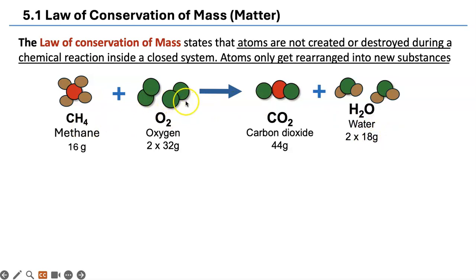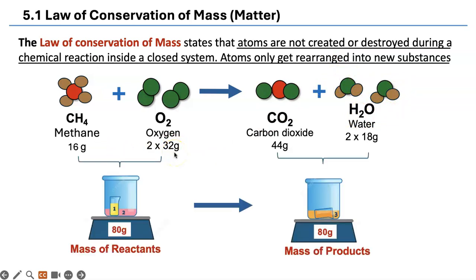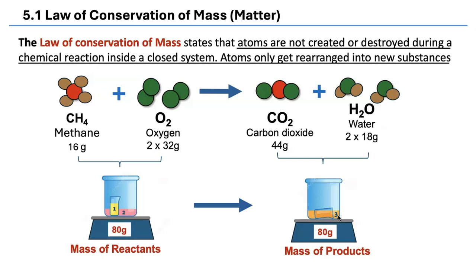In this equation, you have the same number of each color of atoms on either side, showing that it is balanced. You have one red on either side, four browns on either side, and four greens on either side. One mole of methane combines with two moles of oxygen to form one mole of carbon dioxide and two moles of water. If you add up these masses, they both equal 80. This is how you show the law of mass conservation is true — by measuring the mass of the reactants and products inside a closed reaction.